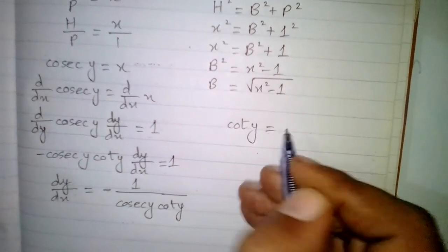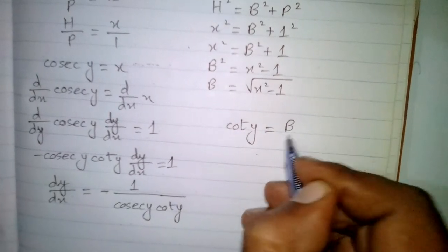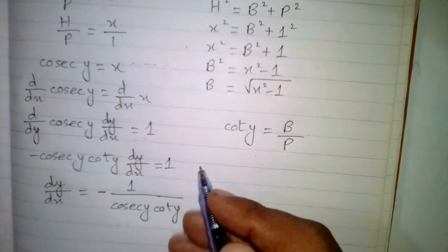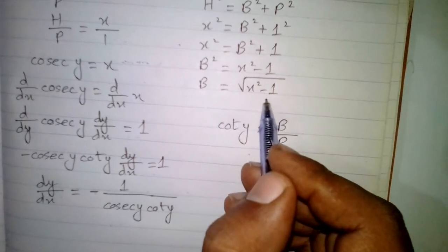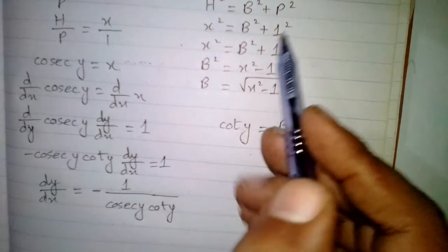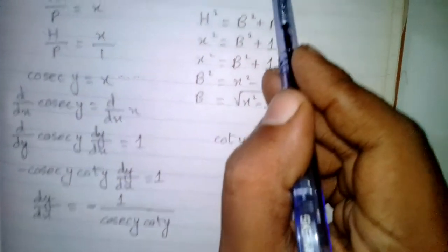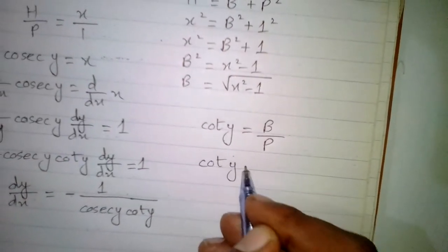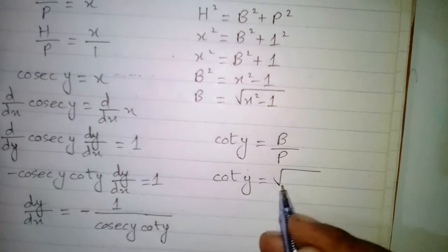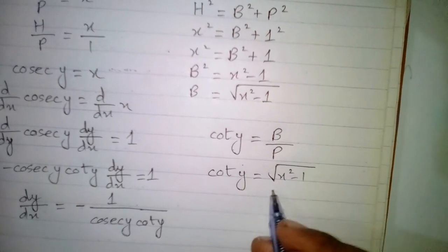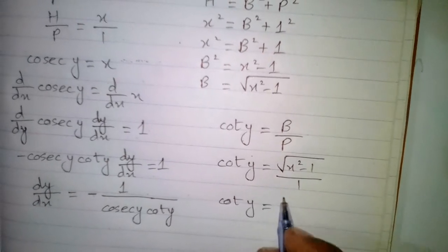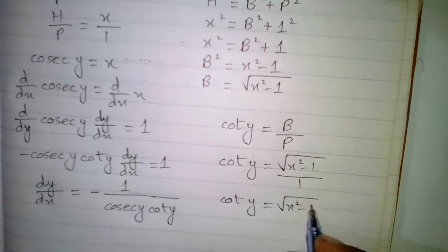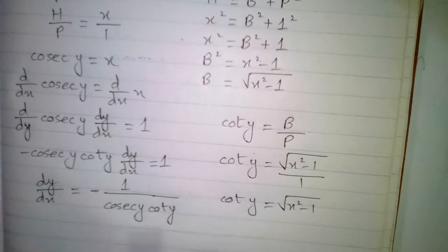Cot y equals base upon perpendicular. The value of base is square root of x squared minus 1 and the value of perpendicular is 1, so cot y equals square root of x squared minus 1 upon 1, which means cot y equals square root of x squared minus 1.